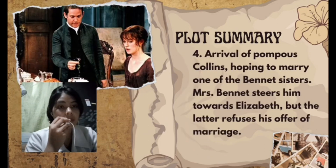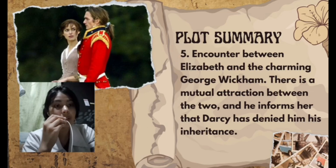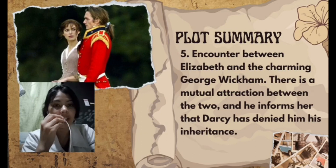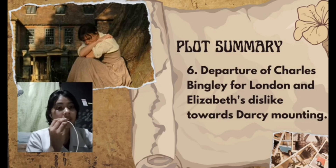Next, pompous Collins arrives hoping to marry one of the Bennet sisters. Mrs. Bennet steers him towards Elizabeth, but she refuses his proposal because she is a woman of integrity and wants to marry someone she truly loves. Next, Elizabeth encounters the charming George Wickham, a handsome fortune-hunting militia officer. Because of his good looks and charm, Elizabeth is attracted to him, and there is mutual attraction between the two. He informs her that Darcy has denied him his inheritance. Then, Charles Bingley abruptly departs for London, and Elizabeth's dislike of Darcy mounts because she believes Darcy was hindering and discouraging Charles' relationship with her sister Jane.